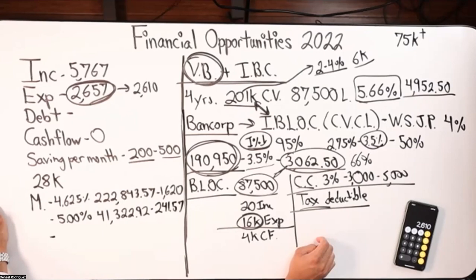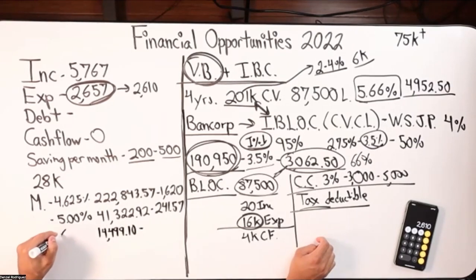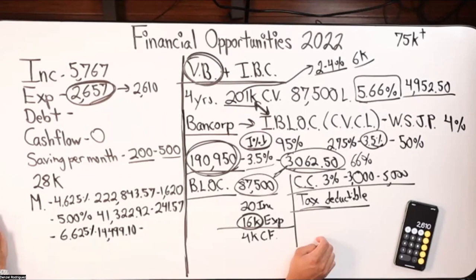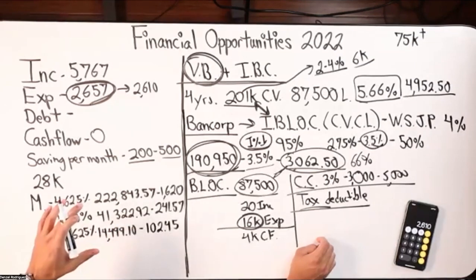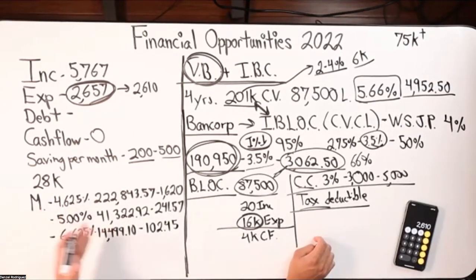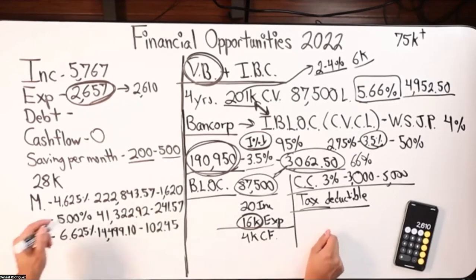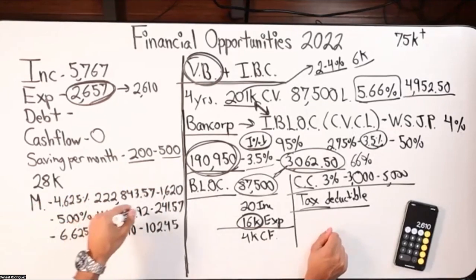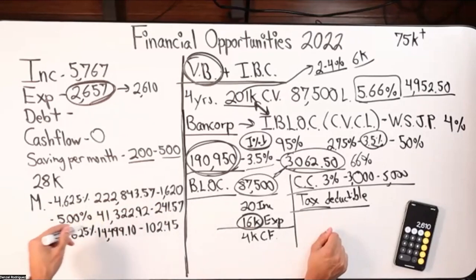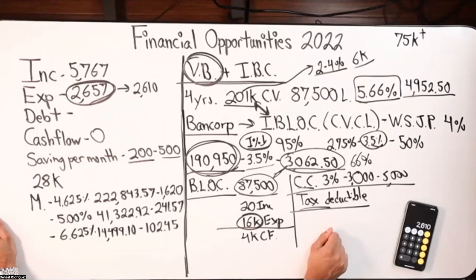The third portion is $14,999.10 at 6.625% interest, with a monthly payment of $102.45. All three are on the same house — it's one mortgage that was divided that way when we got it. I'd love to see the documents on that — I'm wondering if this is the primary mortgage and then a home equity loan or second and third lien loans.